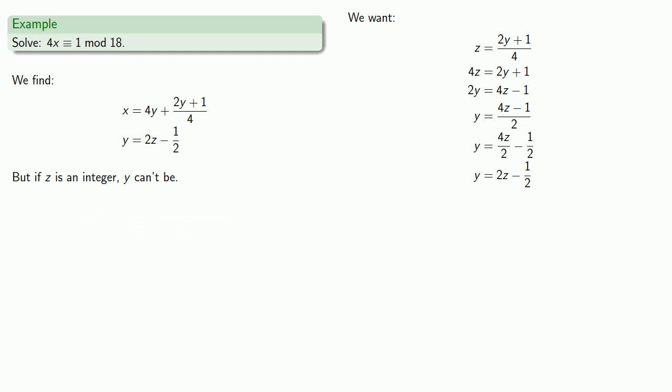Well, there is a problem here. If Z is not an integer... Remember that Z is 2Y plus 1 over 4. So if Z is not an integer, then neither is 2Y plus 1 over 4. So X won't be an integer. And what this means is that 4X congruent to 1 mod 18 has no solution.